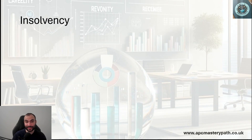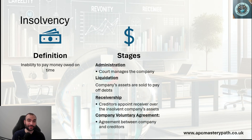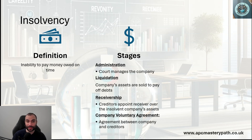Moving to insolvency. Insolvency is when businesses or people are not able to pay the debts they agreed to pay on time. This can take a number of stages: starting with administration, where the court takes management of the firm; moving to liquidation, where the business sells its assets to pay the debts; receivership, where the board of directors gives rights to specific assets to a specific receiver; and then voluntary agreements between creditors and the business to write off some debts and establish a payment plan for the rest.